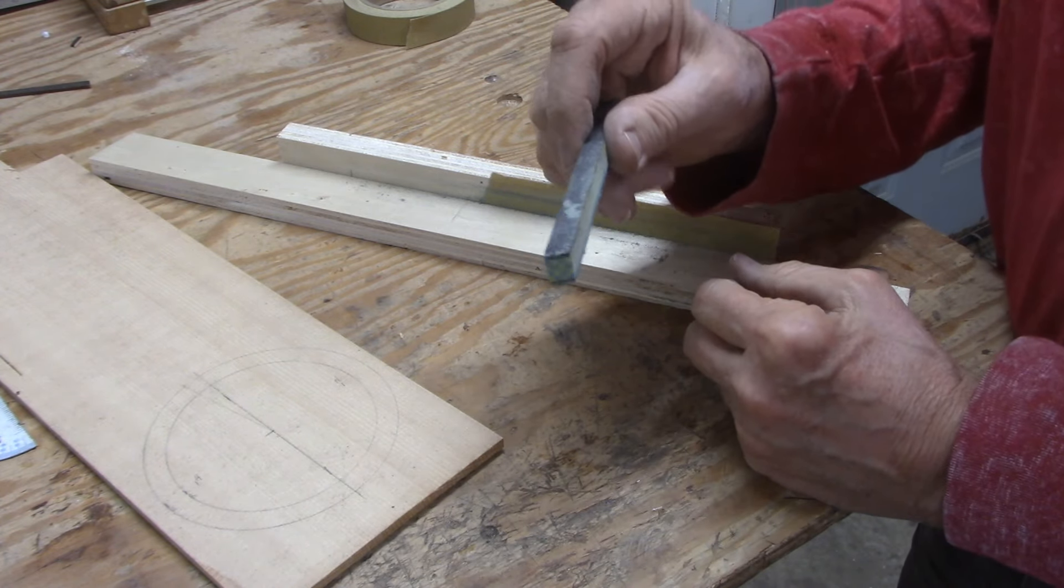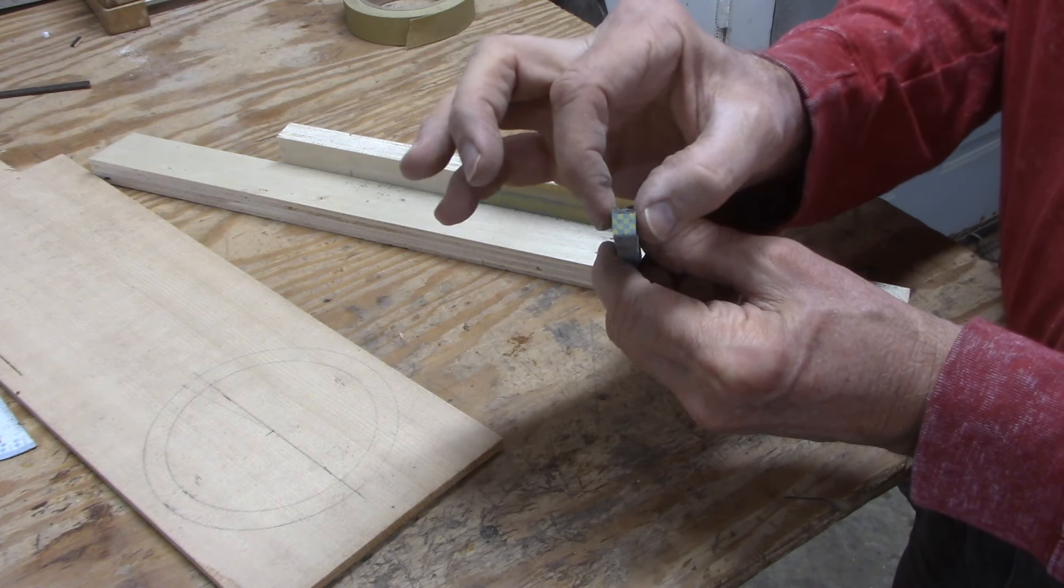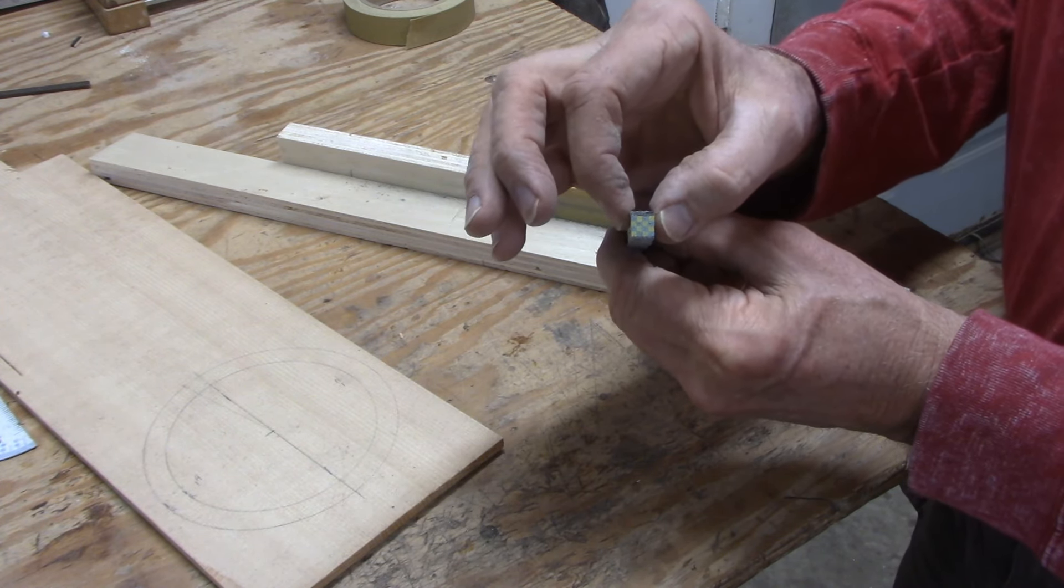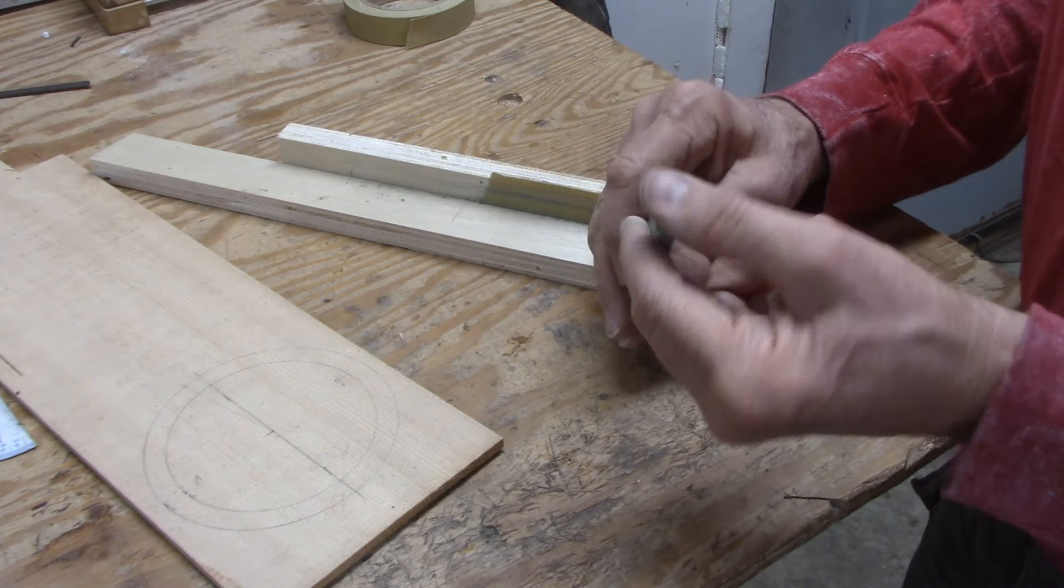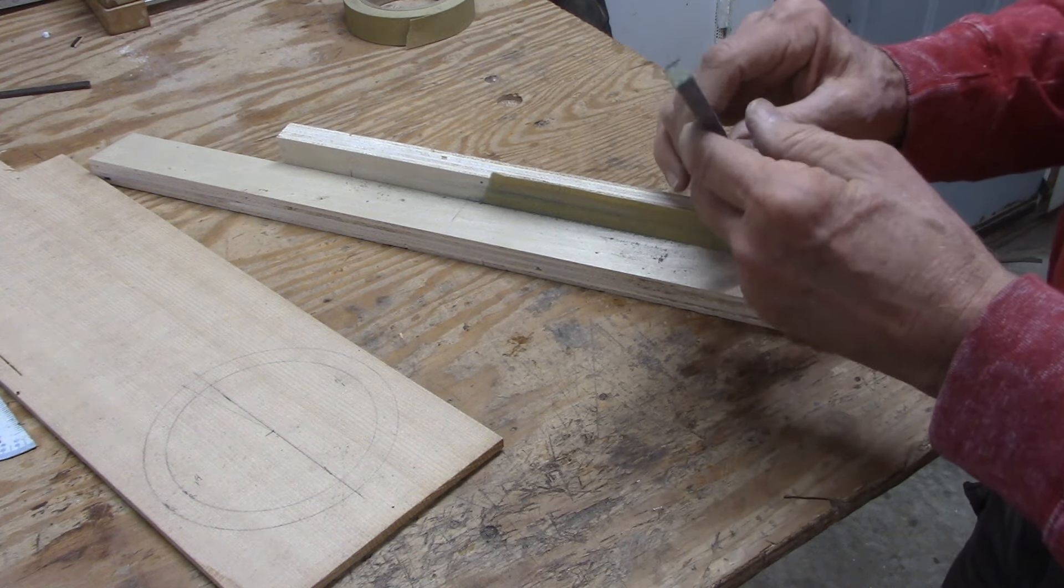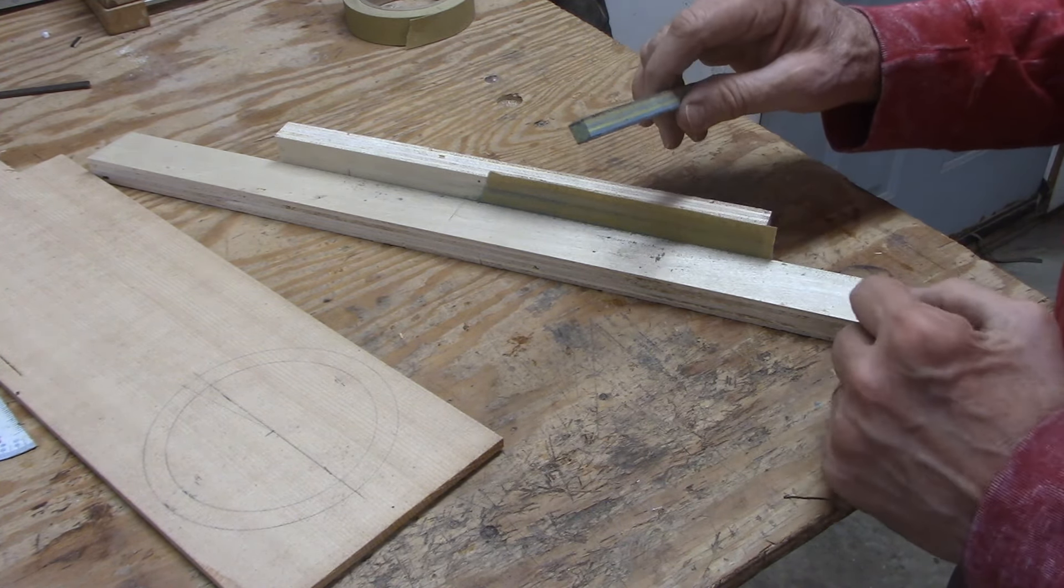So there it is with a barely perceptible change in width from the outer edge of the sound hole ring to what will be the inner edge. Now I'm ready to slice this up and start assembling the rosette.